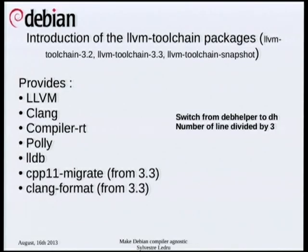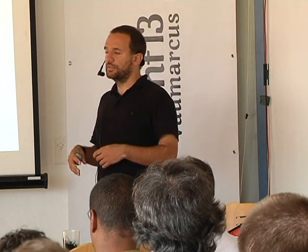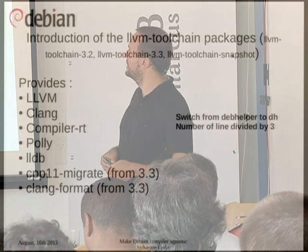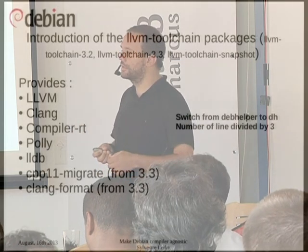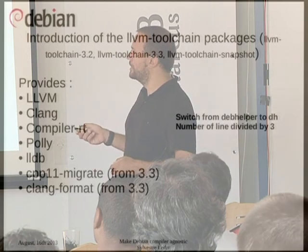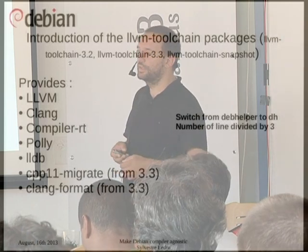Another approach is to let upstream know about the issues so they fix their bad code. We also introduced new packages. We were using two different packages — LLVM and Clang — and when I tried to package LLDB, a new debugger in the LLVM community, it required both LLVM and Clang sources. So I decided to start again from scratch and design those packages as the LLVM toolchain package. Now we have six source tarballs, and from these six we build all the packages.